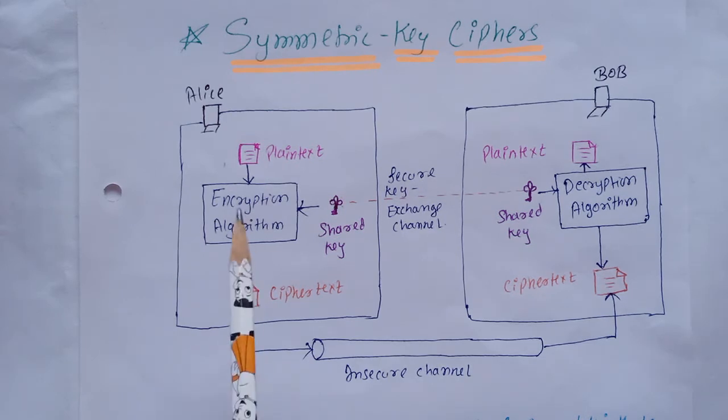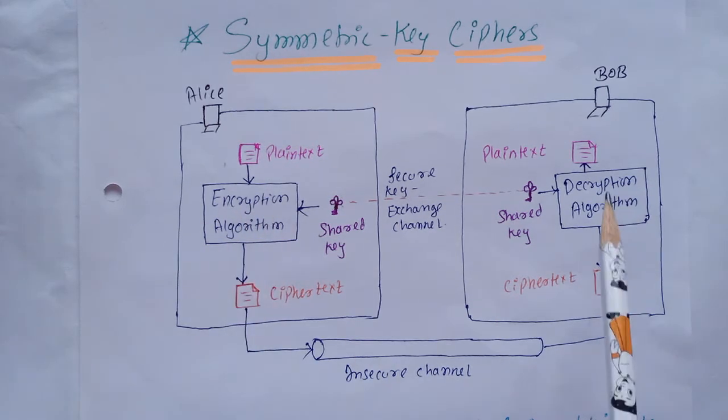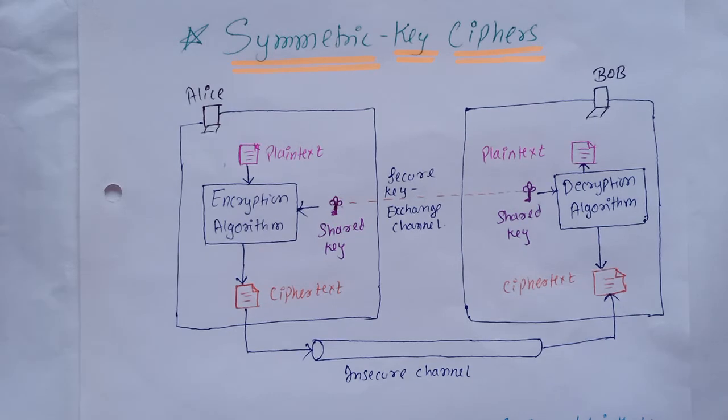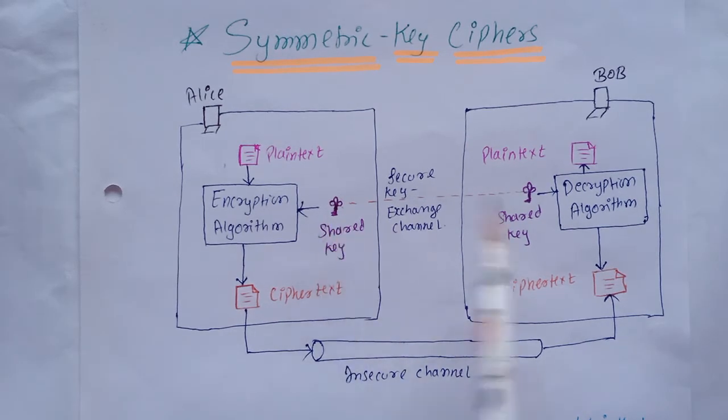We refer to encryption and decryption algorithms as ciphers. This key is a set of values or numbers that the cipher algorithm operates on.